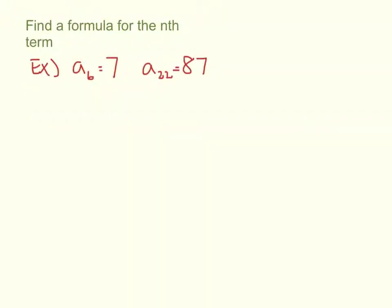Okay, finally, let's do it whenever we're just given two terms in the sequence. We're not given the common difference. So just like with that a₁, first thing we need to do is find the common difference. The difference will be 87 minus 7 over what? 22 minus 6. Good.